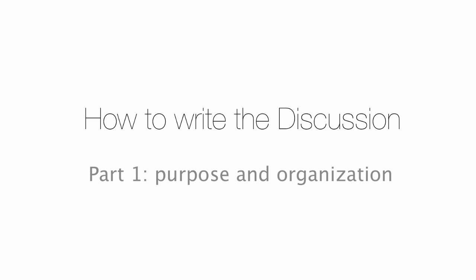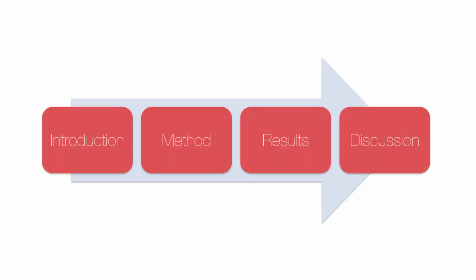In this video we'll look at the content of the discussion section. The discussion section is the fourth and last part of the research paper. It comes right after the results. In the results section you explained all of the facts about the trends in your data. Now in the discussion you're going to write about the meaning of those results.